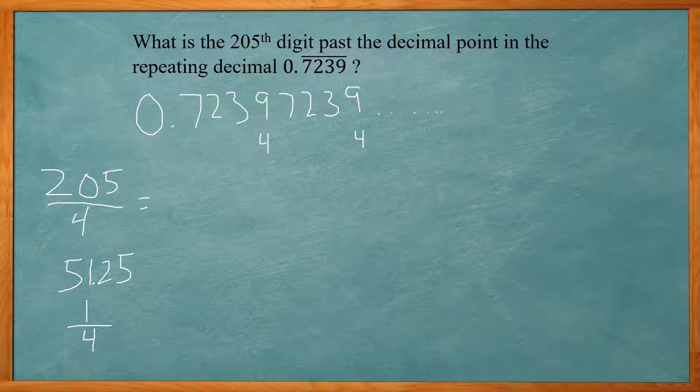Now if I had a remainder of 0, that'd be a multiple of 4 and that'd be the fourth digit, the 9. So if I have a remainder of 1, that means I'm at this first digit. If I had a remainder of 2, it'll be here.